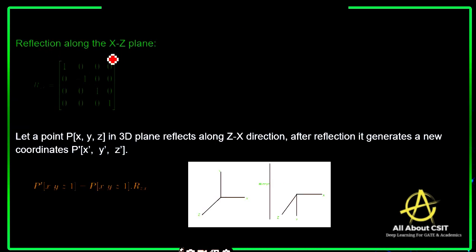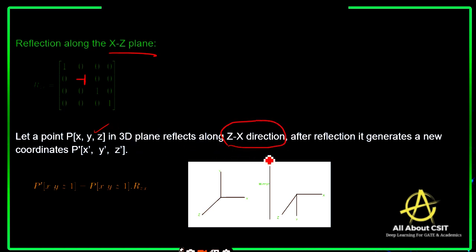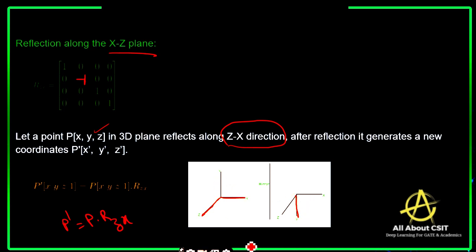For reflection along the XZ plane, X and Z both remain positive whereas Y becomes negative. Suppose you consider point P(X, Y, Z) in a 3D plane reflecting along the XZ direction. After reflection, it generates coordinates P'(X', Y', Z'). So P' is equal to P into the reflection along ZX. The Z and X remain the same; whatever Y is, that gets reflected. This is the mirror image of the XZ plane.